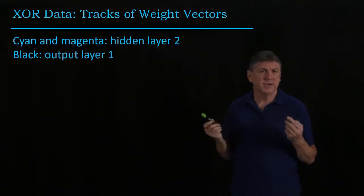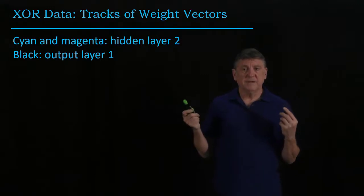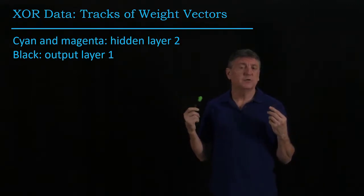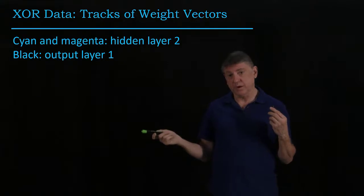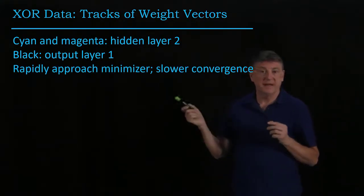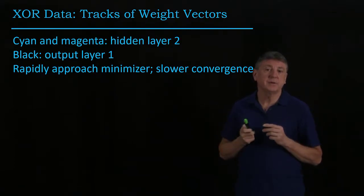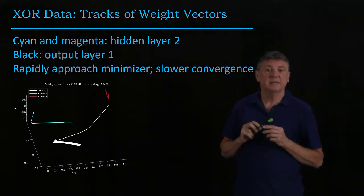Here I'm going to use cyan and magenta to represent the weight vectors for the hidden layer, and I'll use black, or in this case white because of the color reversal, and black is in the written notes, and what will happen is this will rapidly approach a minimizer, and then it'll have a slow convergence.